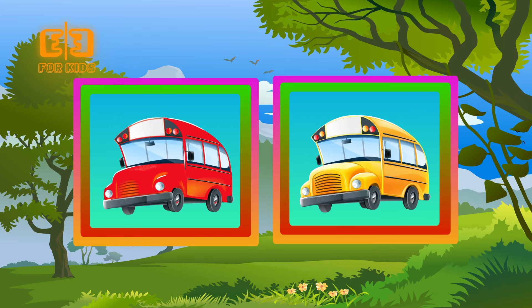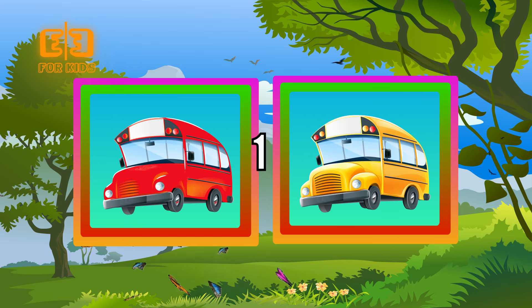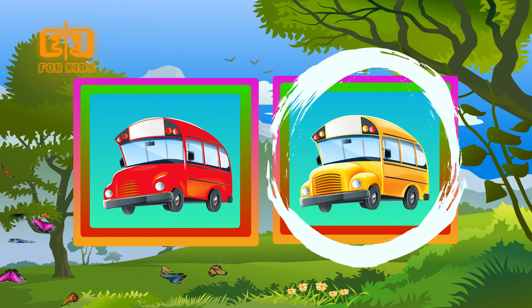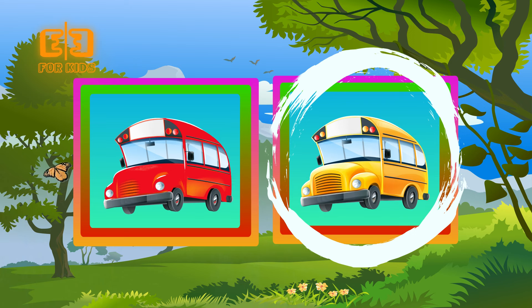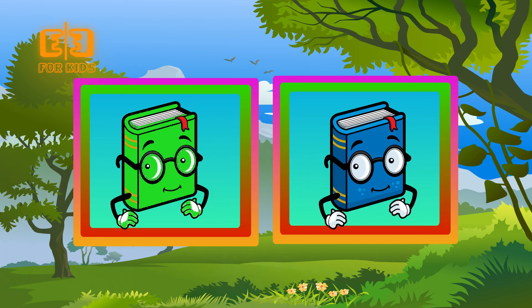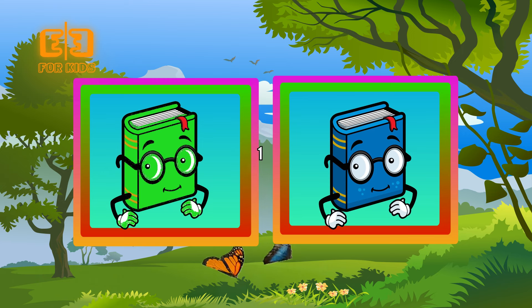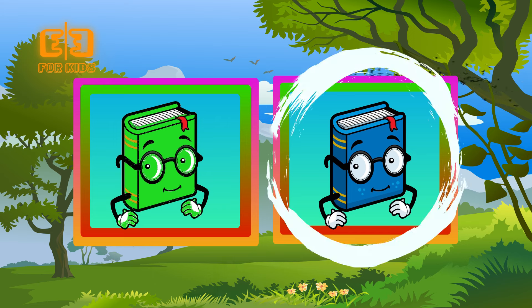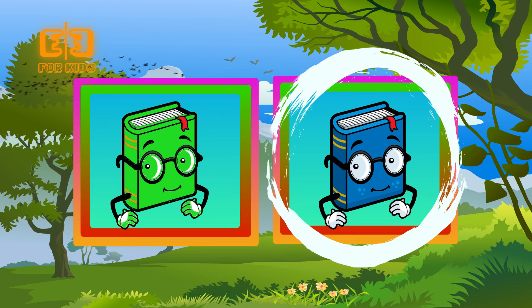Choose the yellow object. Three, two, one. Correct kids! A yellow bus. Choose the blue object. Three, two, one. Correct kids! A blue book.